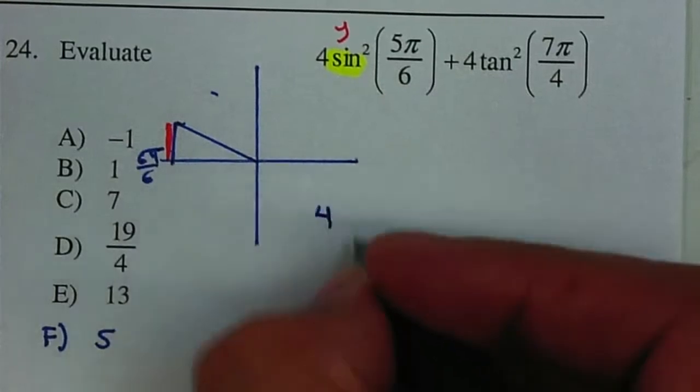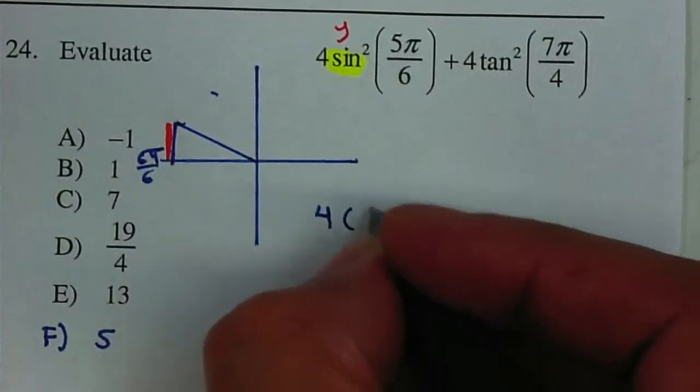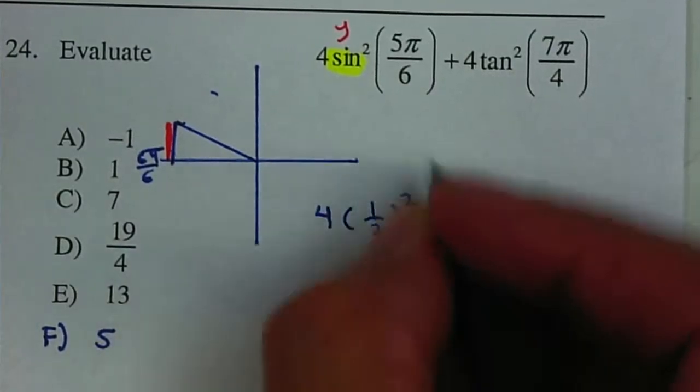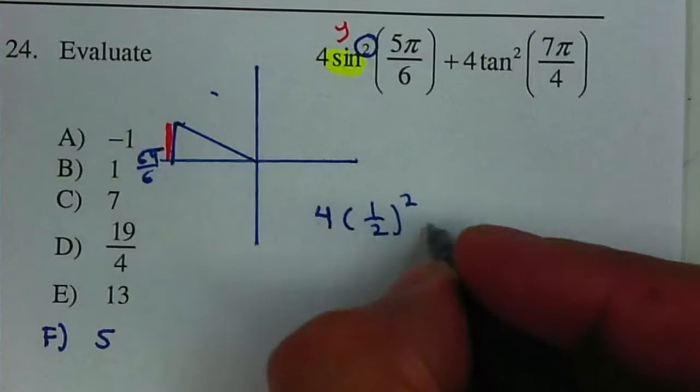So I have 4 multiplied by 1 half squared. Don't forget about your square. Plus 4.